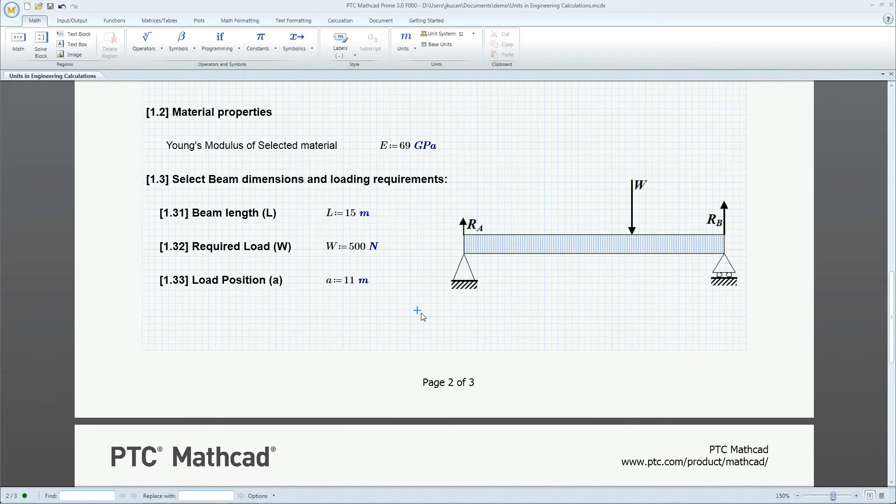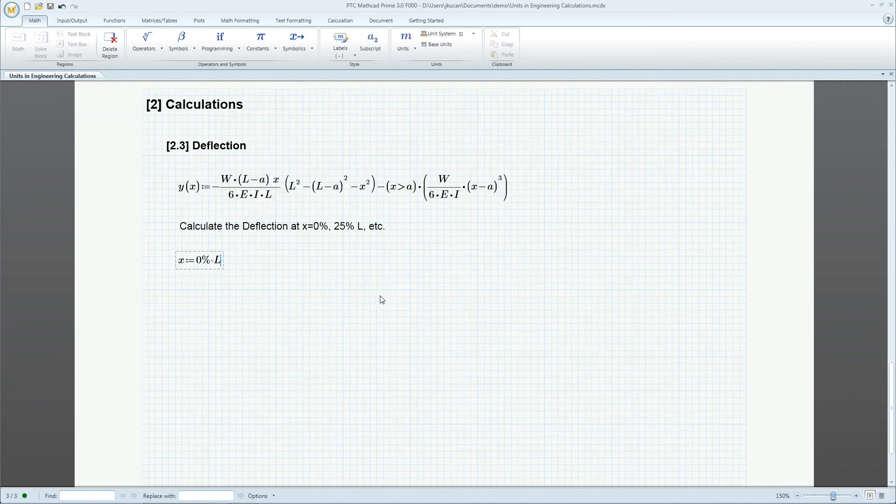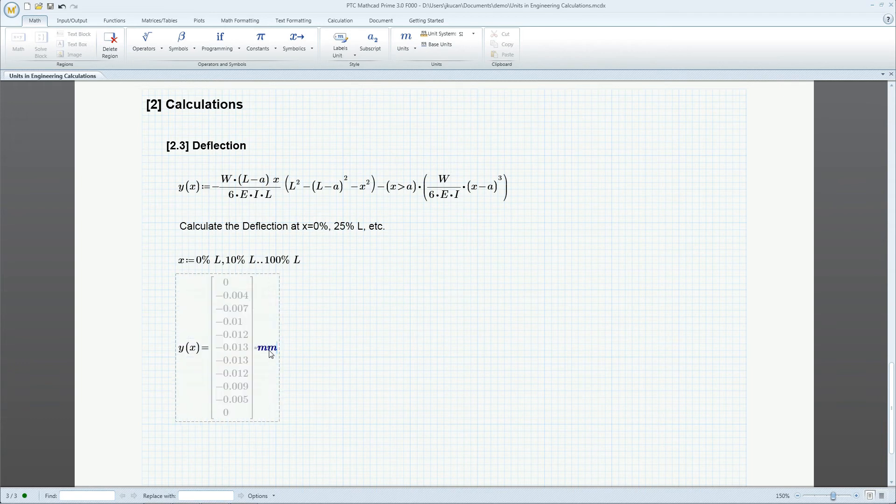These variables are now used in the equations for the moment of inertia and displacement. We calculate the deflection from 0 to L with 10% increments. The result is returned in meters by default, but can easily be changed to millimeters.